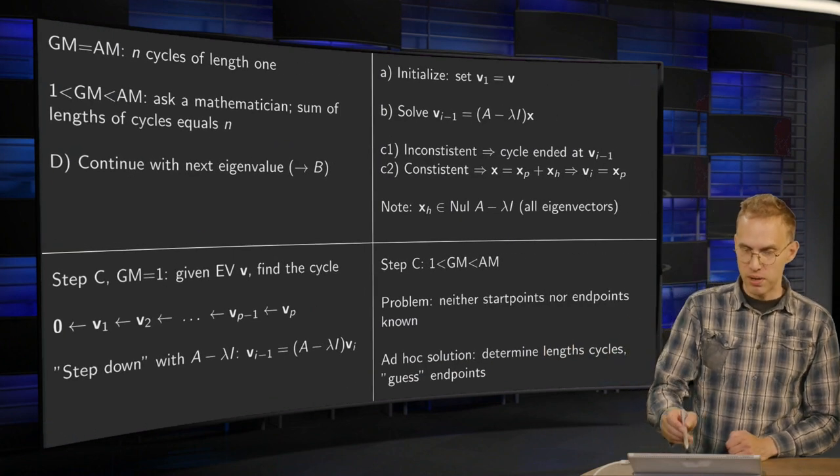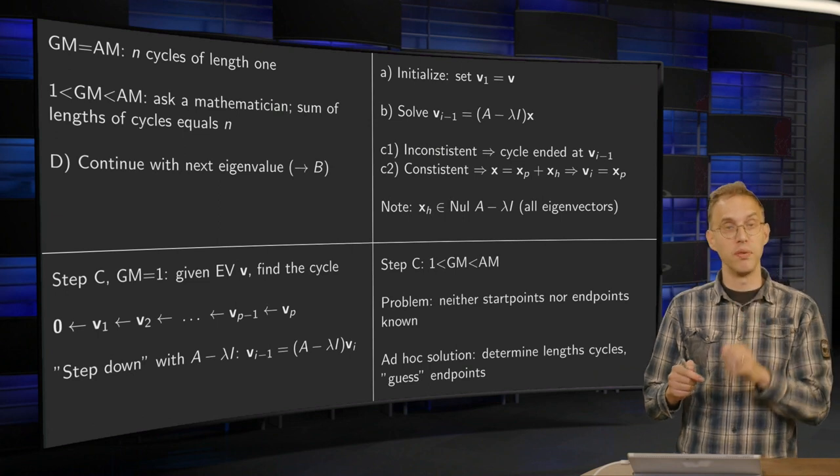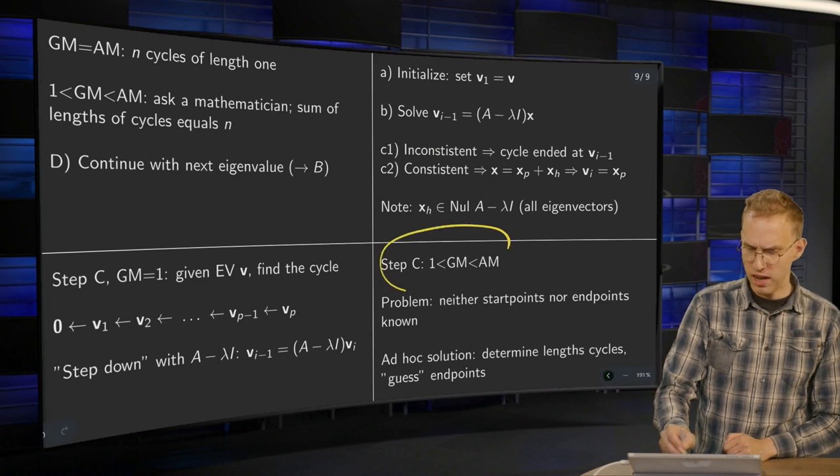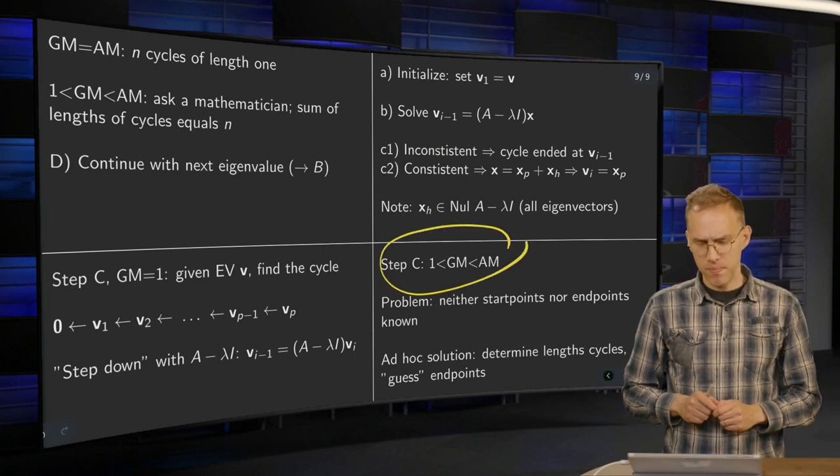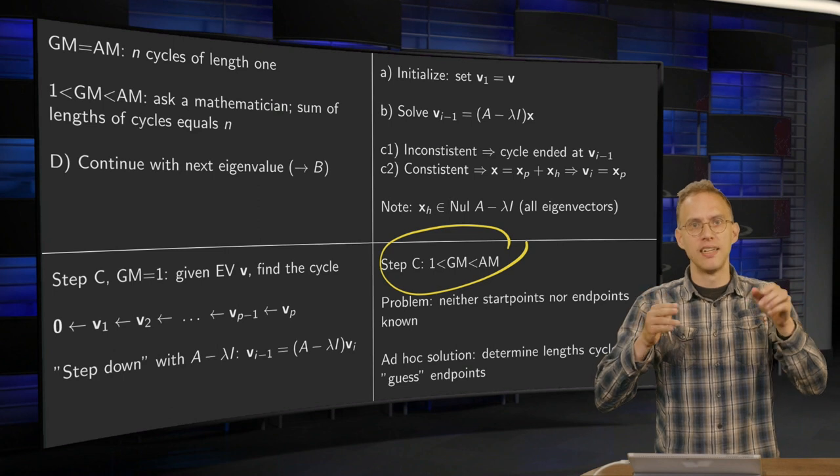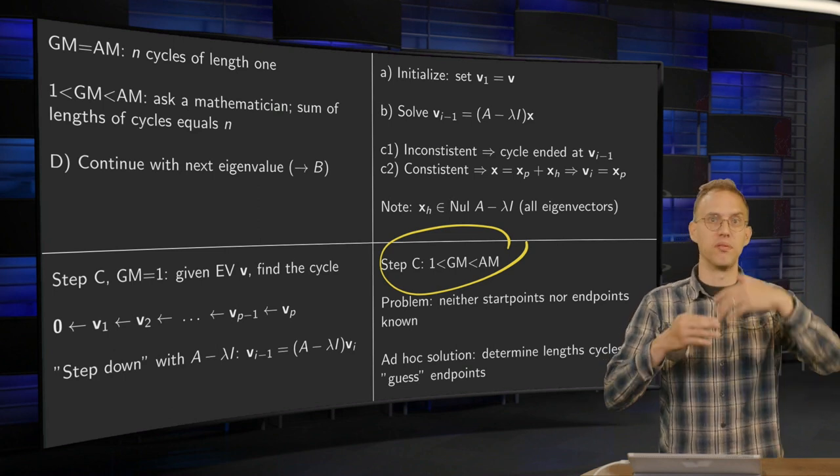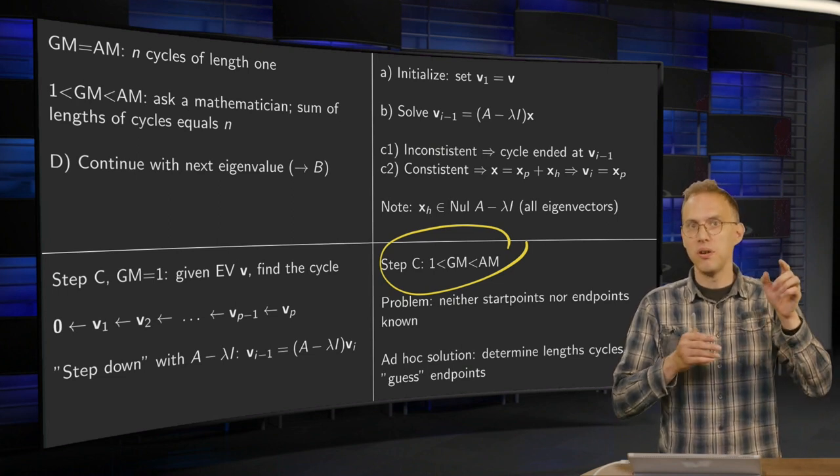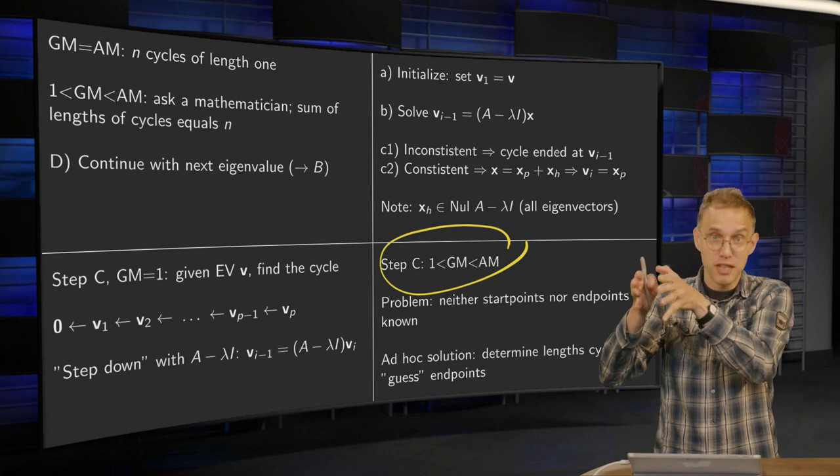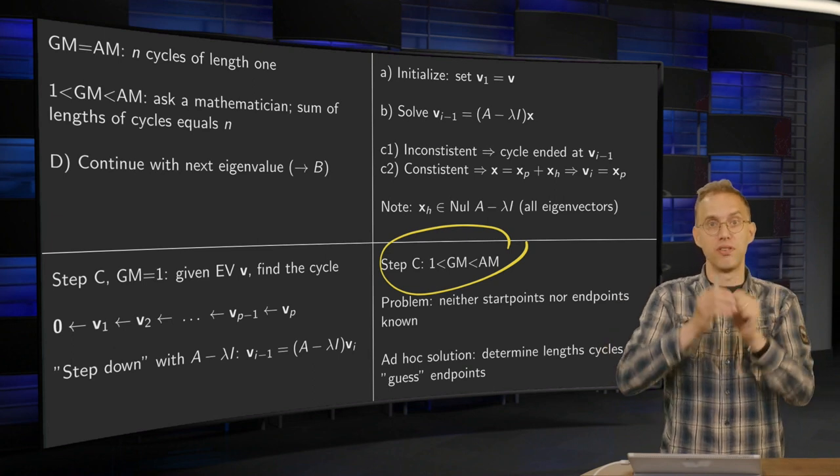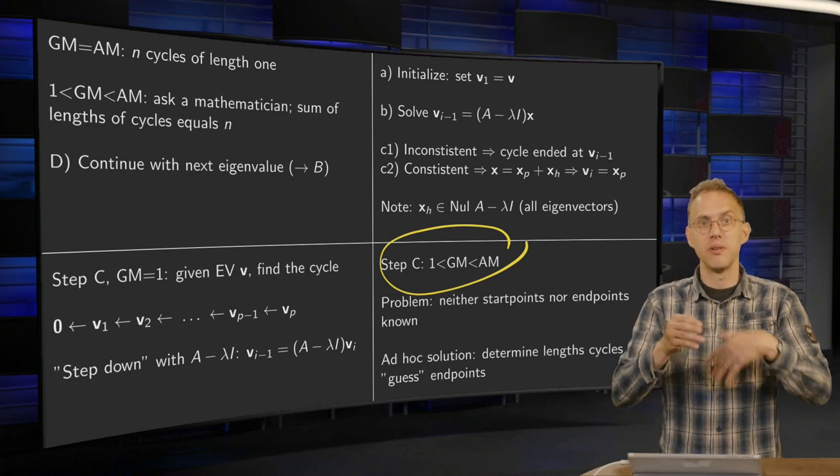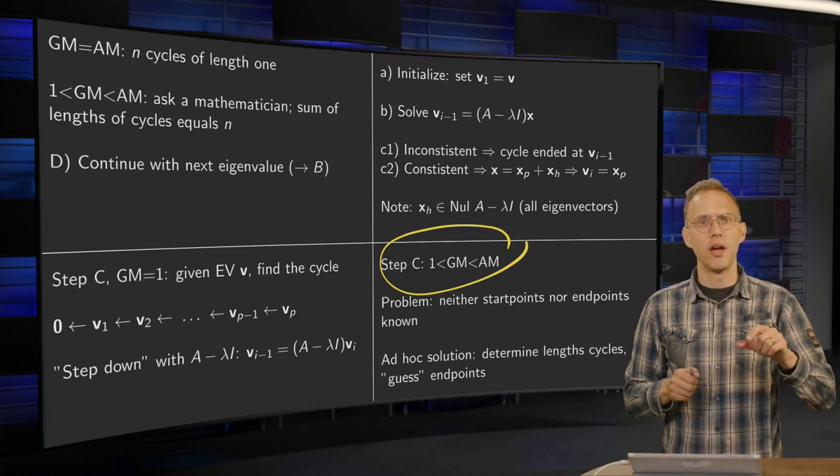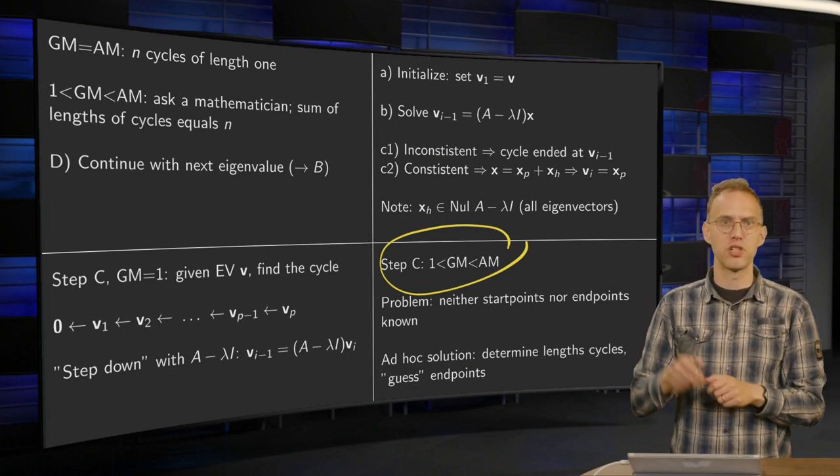Then this in-between step. So we know what to do in this GM equals 1 case. We know what to do if GM equals AM. So what's so nasty here? Now, the problem is you have, say, AM of 5, GM of 2. The point is that you don't know either—you don't know the endpoints, and you don't know the starting points of your cycle. So you can't really get going. You can determine how long the cycles are, but you do not know the endpoint nor the start point. So what to do?